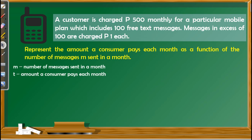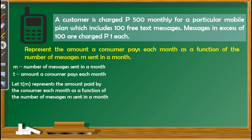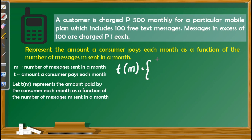Let T represent the amount paid by the consumer each month as a function of the number of messages M sent in a month. We are looking for the piecewise defined function that will represent this situation. For the first condition: a customer is charged P500 monthly which includes 100 free text messages. This means you pay P500 if you use up to the 100 free text messages, so M is less than or equal to 100. You may use all 100 or fewer.